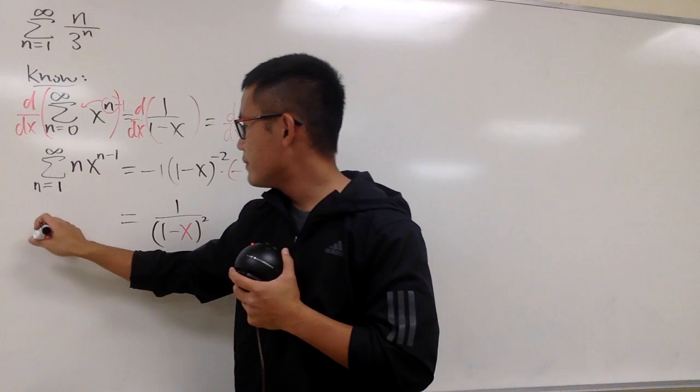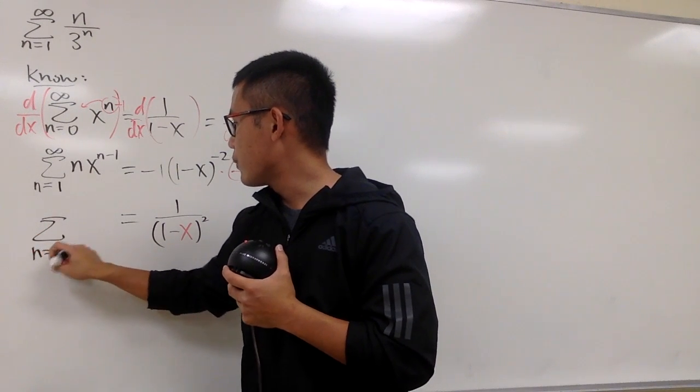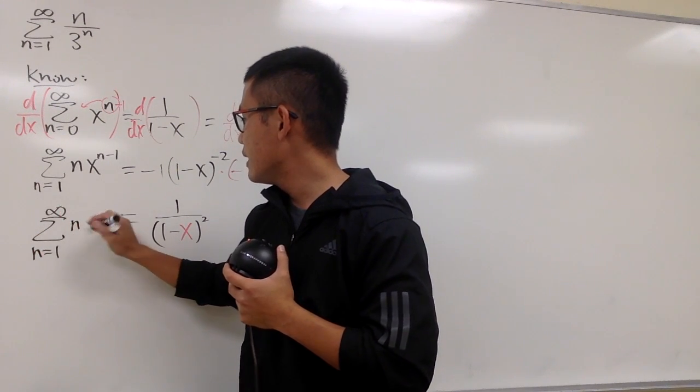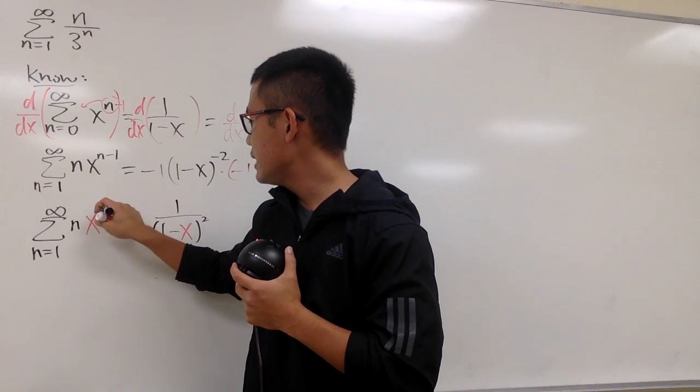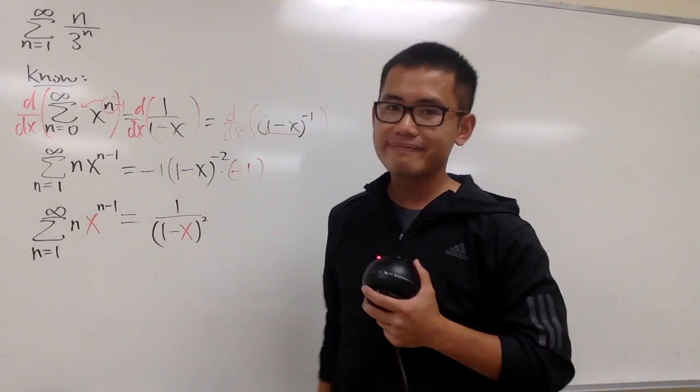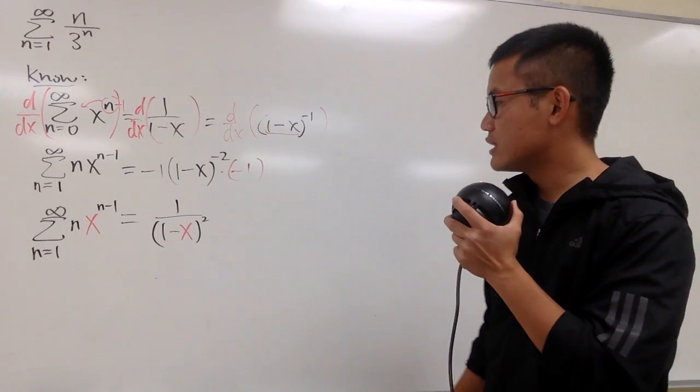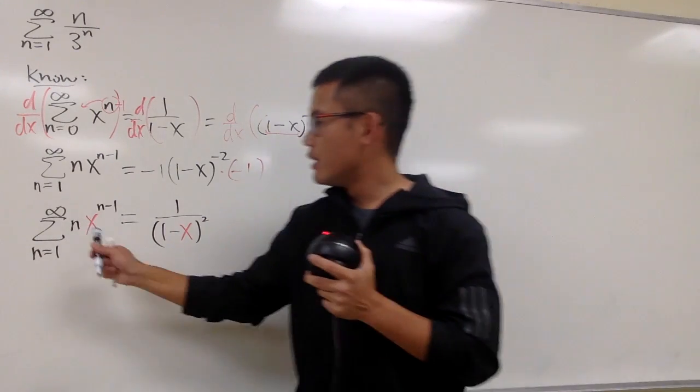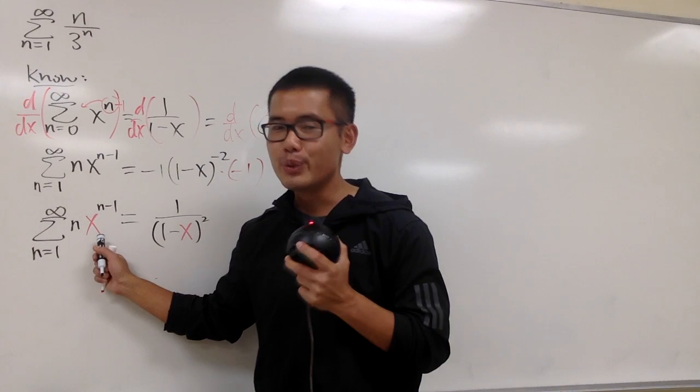On the left-hand side, we have the series when n goes from 1 to infinity, n times x to the n minus 1 power. What should we do next? Well, why don't we plug in x equals 1 third?